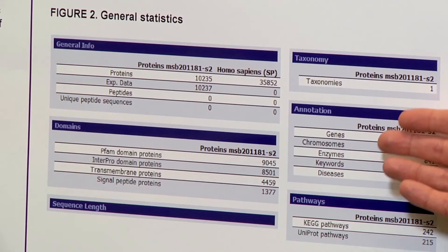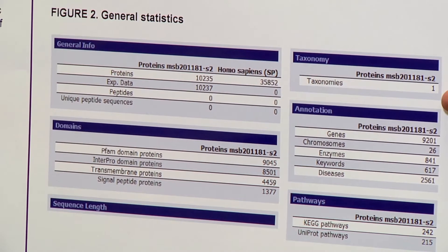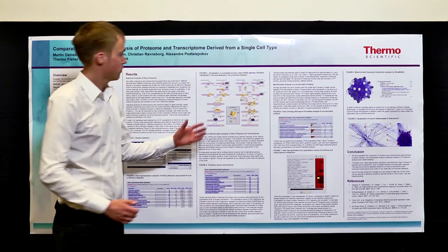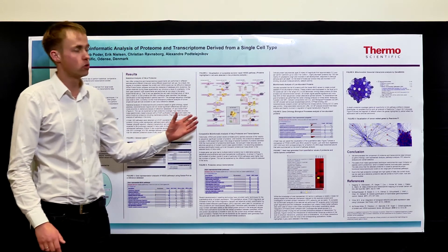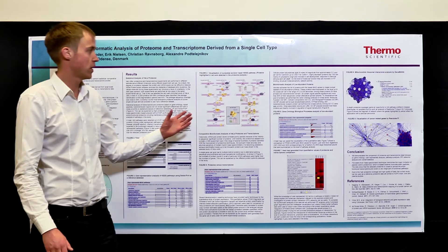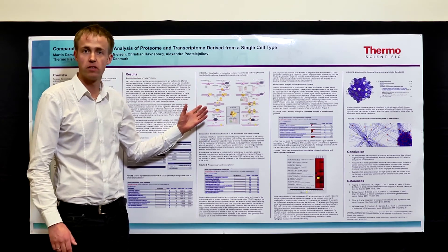What you can see in figure 2 is an overview of the different types of biological annotation associated with this data set and how it is displayed in Protein Center. One of the other interesting things you can do with Protein Center today is pathway analysis.